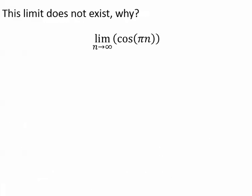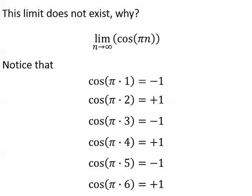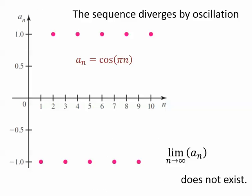Let's do another one. This limit does not exist. Why? Let's try putting in some numbers. If n equals 1, we get negative 1. For n equals 2, we get positive 1. For n equals 3, negative 1. At n equals 4, positive 1, negative 1, positive 1. The numbers just jump back and forth between negative 1 and positive 1. This jumping back and forth is called oscillation, and this sequence diverges by oscillation. It does not settle on one value — it just jumps back and forth. So we say that the limit as n goes to infinity of a sub n does not exist.